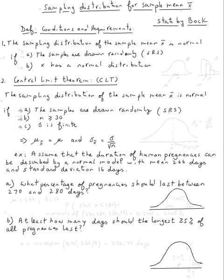Once we know the sampling distribution of the sample mean is normal, we also know that the population distribution for x could be normal, it doesn't have to be — it could be skewed, it could be symmetric. However, the distribution for x̄ will always be normal, as long as either condition one or the Central Limit Theorem condition two is met.